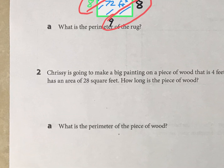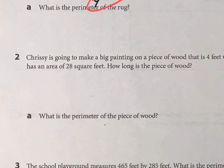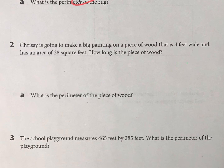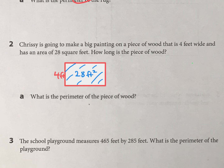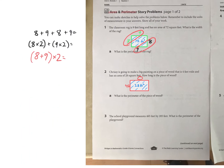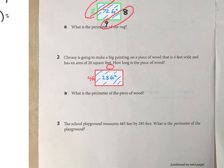Number 2 is going to follow that exact same pattern we did for number 1. This time, she's making a painting on a piece of wood that is 4 feet, and the area is 28 feet. First, you need to figure out what is this side — how long is the piece of wood — and then, using the same formula we just did, figure out the perimeter.